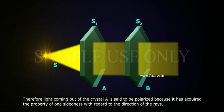Therefore, light coming out of the crystal A is said to be polarized because it has acquired the property of one-sidedness with regard to the direction of the rays.